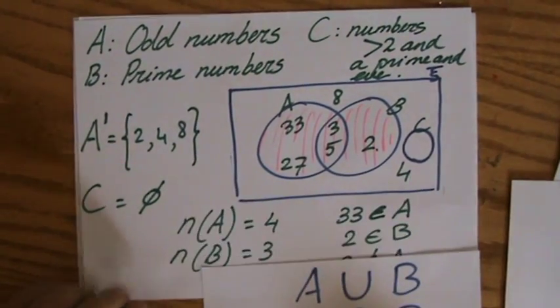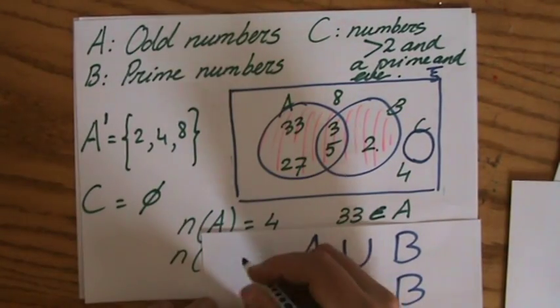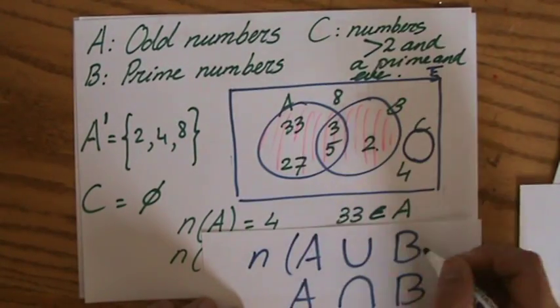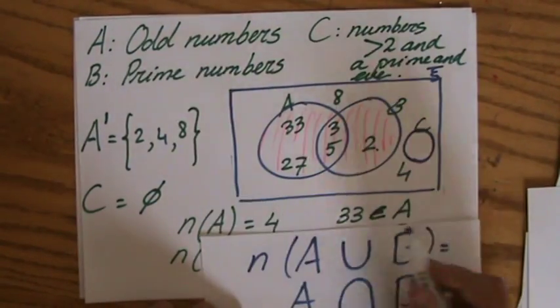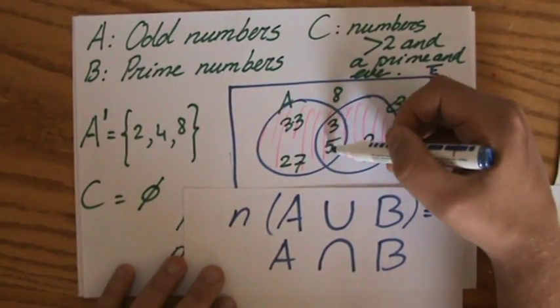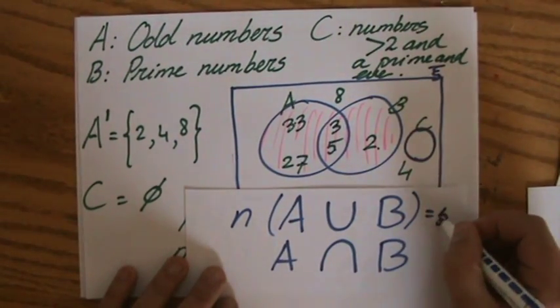So if I would combine two questions, let's say the number or the amount of elements of A union B, I would say, well, one, two, three, four, five of them in total.